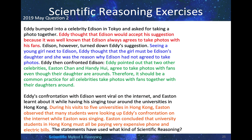May 2019. Eddie bumped into a celebrity, Addison, in Tokyo and asked to take a photo together. Eddie thought Addison would accept his suggestion because it was well known that Addison always agreed to take photos with friends — so Eddie deduced that Addison would accept. This is deduction. However, Addison turned down Eddie's suggestion. Seeing a young girl next to Addison, Eddie thought the girl must be Addison's daughter and she was the reason why Addison had not agreed to take photos. Eddie came up with a reason for the refusal — so this is abduction.